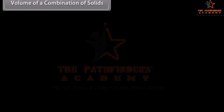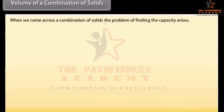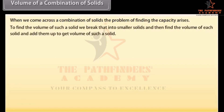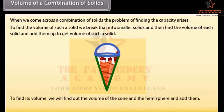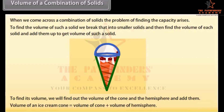When we come across a combination of solids, the problem of finding the capacity arises. To find the volume of such a solid, we break it into smaller solids, find the volume of each, and add them up. Look at this ice cream cone — it is a combination of a cone and a hemisphere. Volume of ice cream cone equals volume of cone plus volume of hemisphere.